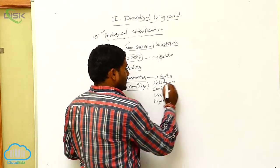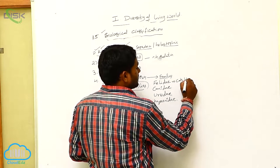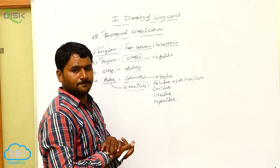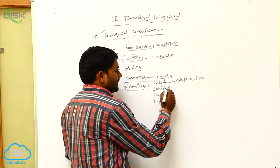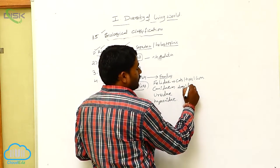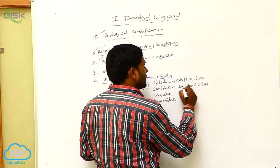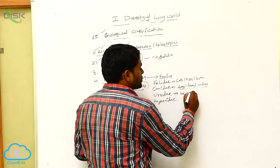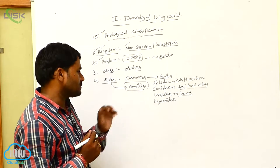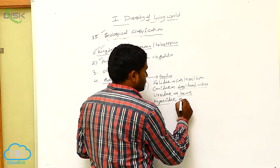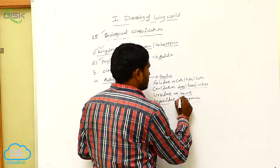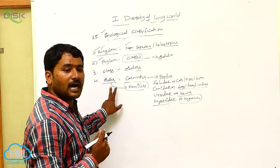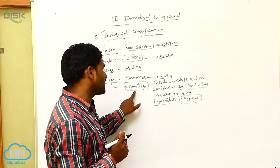If you take Felidae, generally cats, tiger, and lion — such animals are joined in the Felidae family. Next is Canidae, in which dogs, foxes, and wolves are joined. Next is Ursidae, in which bears are joined. Next is Hyaenidae, in which hyenas are joined. So this is about the order — a group of one or more closely related families.